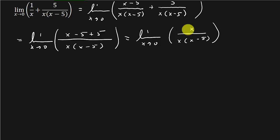Alright, so look at this. How wonderful is that? The x's cancel. And so we're left with the limit as x goes to 0 of 1 over x minus 5.